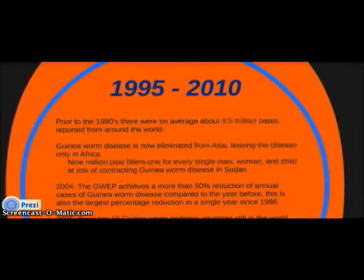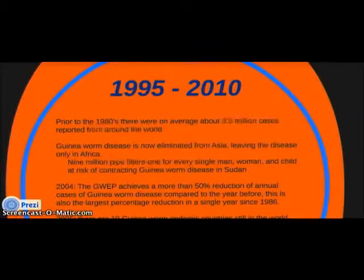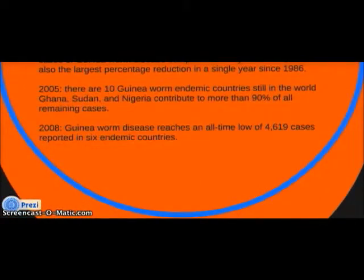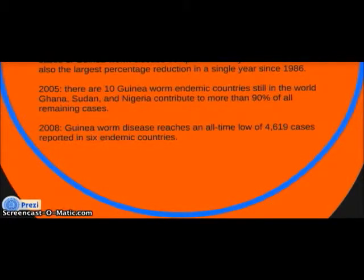In 2004, the Guinea Worm Eradication Program achieved a more than 50% reduction in annual cases compared to the previous year — the largest percentage reduction in a single year since 1986. In 2005, ten guinea worm endemic countries remained; Ghana, Sudan, and Nigeria contributed to more than 90% of all remaining cases.